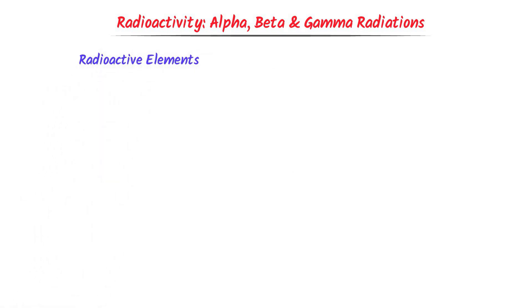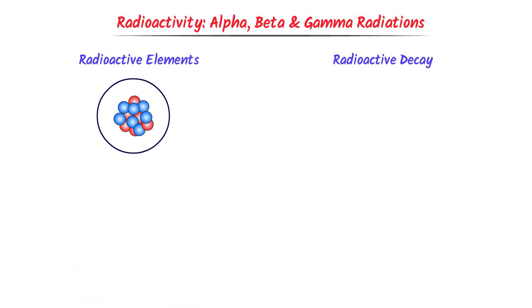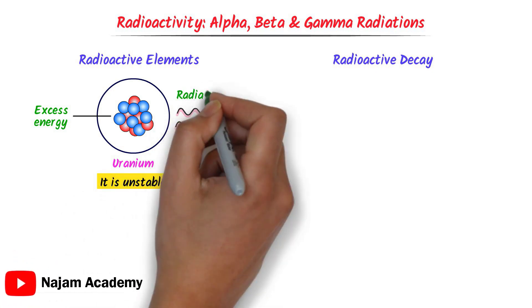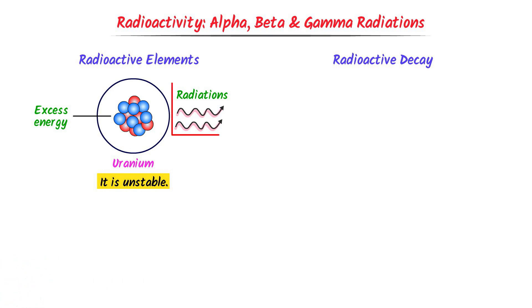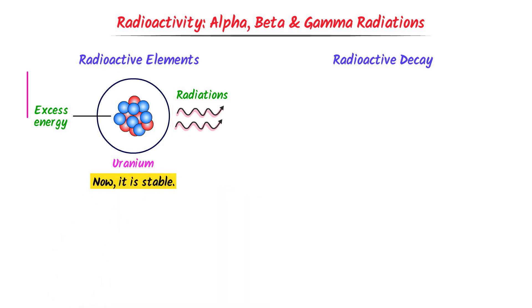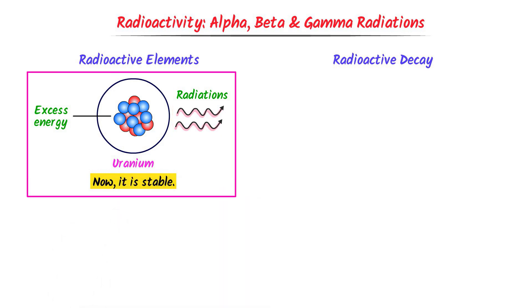Let me teach you what radioactive elements and radioactive decay are. Consider big atoms like uranium. The nucleus of uranium has excess energy, due to which uranium is unstable. It will release this energy in the form of radiations. When uranium releases this extra energy, it will get stability.